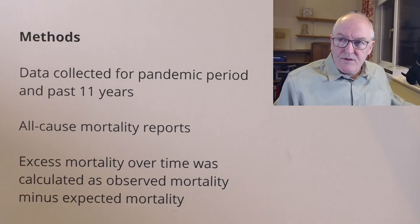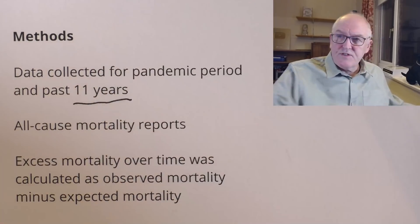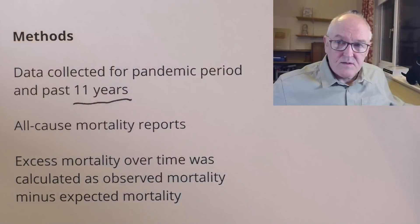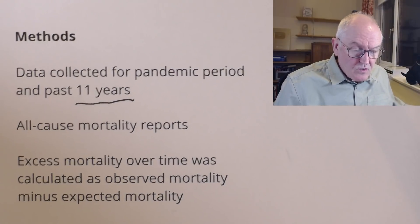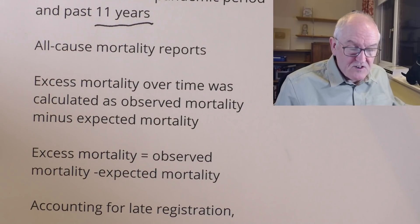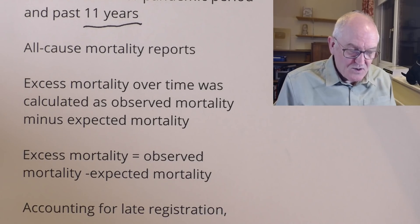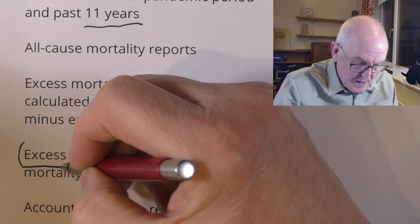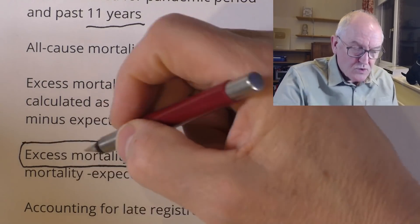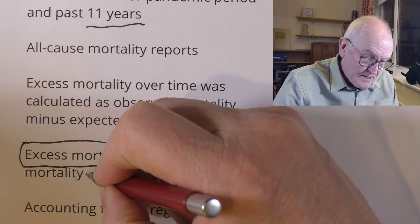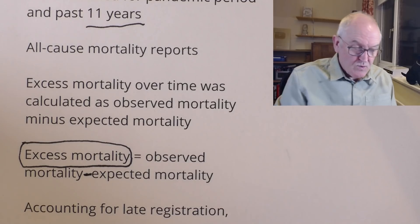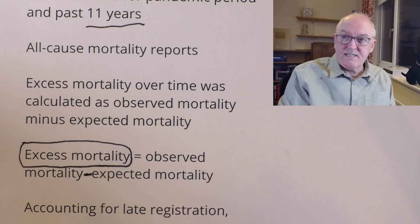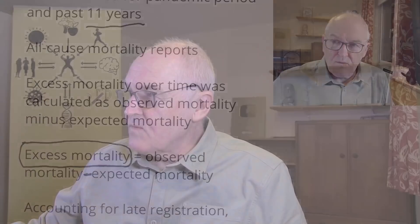Data was collected for the pandemic period and the past 11 years. The Office for National Statistics in the UK, for example, uses the average of the last five years for excess mortality, but this study went further where data was available. All-cause mortality reports were used. Excess mortality over time was calculated as observed mortality minus expected mortality — what they actually saw, take away what they expected, equals the excess mortality.